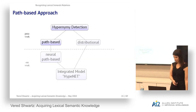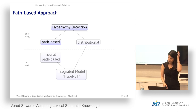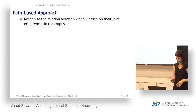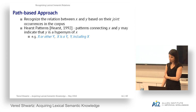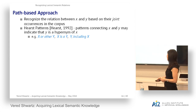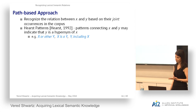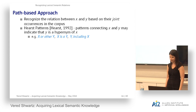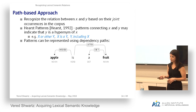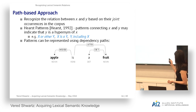The path-based approach looks at joint occurrences of x and y in the corpus to infer the relation. This started with Hearst patterns in 1992 — 12 patterns that, when connecting two words x and y in text, may indicate y is a hypernym of x. Examples include 'x or other y,' 'x is a y,' 'y including x.' For instance: 'cats are other animals,' 'cat is an animal,' 'animals including cats.' Follow-up work used dependency paths between words, which is more informative as it removes redundant information and captures dependency labels.